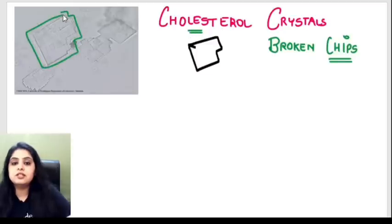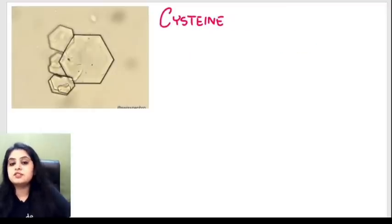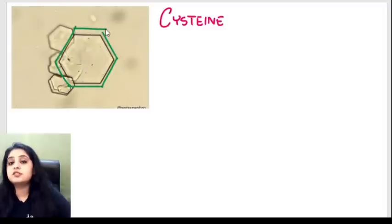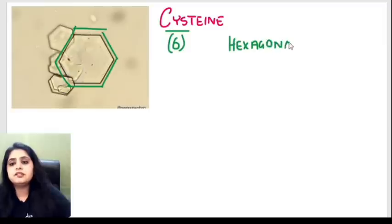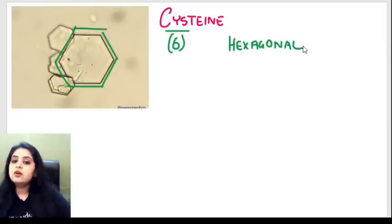The next is the cysteine crystal. If you count the number of sides, it has six sides. I've always learned cysteine as '16' — so this is the hexagonal crystal. For every crystal we'll have a mnemonic or a way of learning, so it's going to be simple.